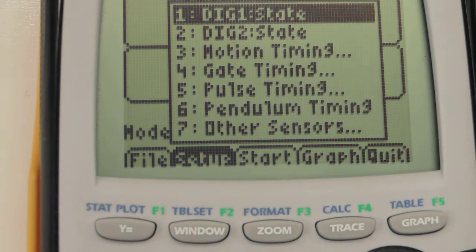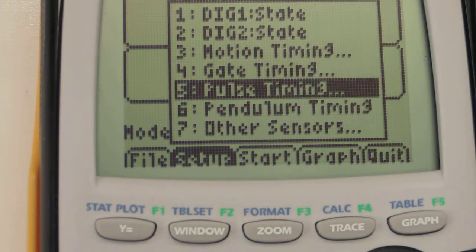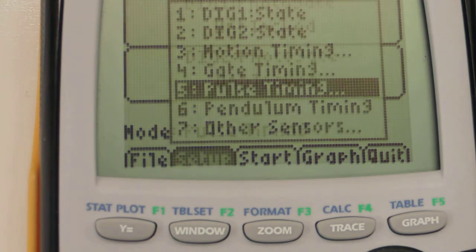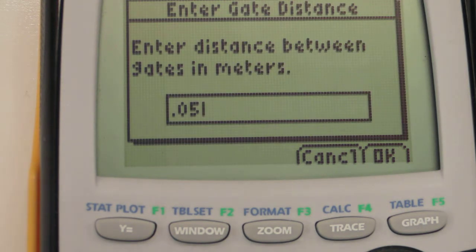Now use the arrow keys on the calculator to go down to where it says Pulse Timing and press Enter. I'm all set. Now it's looking for the distance between my two photo gates, but I'm not going to use that function. So I'm just going to go ahead and press OK.